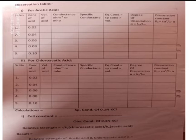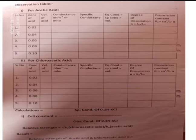Calculate conductance, then specific conductance, then equivalent conductance, then degree of dissociation. Alpha is equal to lambda V divided by lambda infinity. The last column is dissociation constant: Ka is equal to C·alpha² divided by (1 − alpha). This table is for acetic acid. The same table is prepared for chloroacetic acid — find out and note down the conductance and calculate all the parameters. From this, you have Ka for acetic acid and Ka for chloroacetic acid.